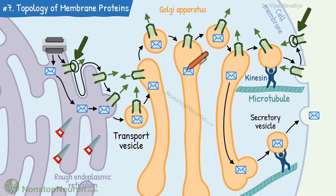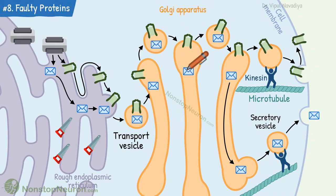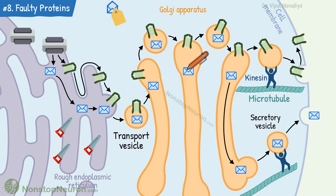The next point is about the degradation of faulty proteins. When a misfolded or unassembled protein is produced, it's tagged with ubiquitin. Ubiquitin tags the protein for destruction. The protein is then removed from the endoplasmic reticulum by a special process called retro-translocation. Then the proteasome degrades such faulty proteins.